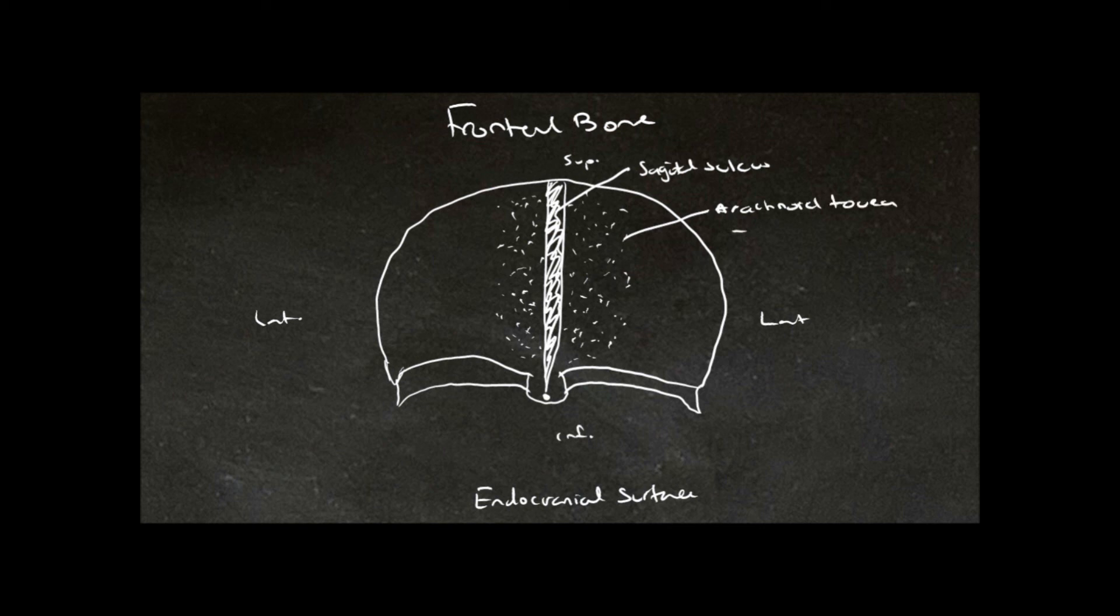And these are caused by the arachnoid villi or arachnoid granulations, which are protrusions of the arachnoid mater, which is one of the layers covering the brain.